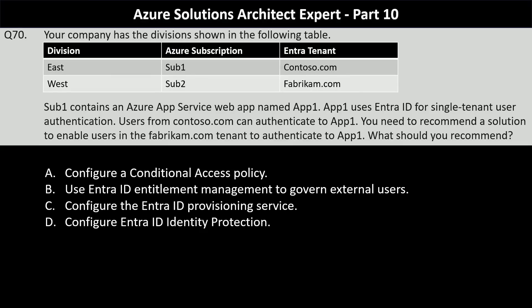Sub One contains an Azure App Service web app named App One. App One uses Entra ID for single-tenant user authentication. Users from contoso.com can authenticate to App One. You need to recommend a solution to enable users in the fabricum.com tenant to authenticate to App One. What should you recommend?